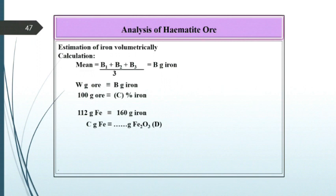So W gram ore corresponds to B gram of iron. Therefore, 100 gram ore corresponds to C percent of iron. So 112 gram of iron corresponds to 160 gram of Fe2O3. Therefore, C gram iron corresponds to D gram of Fe2O3.